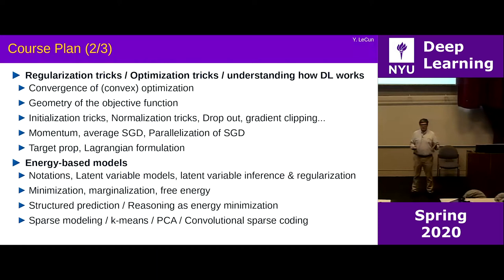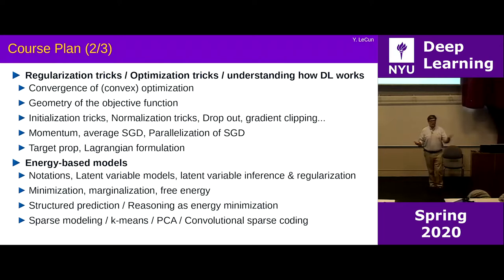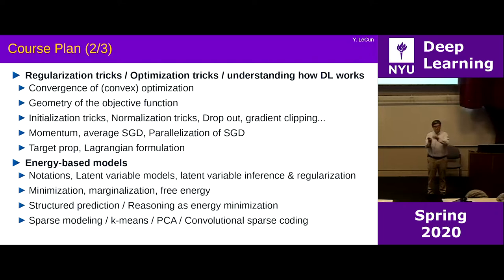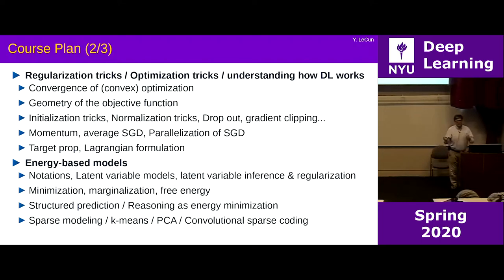The common view is that a neural net is just a function that computes its output as a function of its input — you run through the neural net and get an output. But that's a fairly restrictive form of inference, because it can only produce one output for a given input. Very often there are multiple possible answers to a given input. Energy-based models let you represent those answers as the minima of some energy function, and your inference algorithm finds values of those variables that minimize the objective.